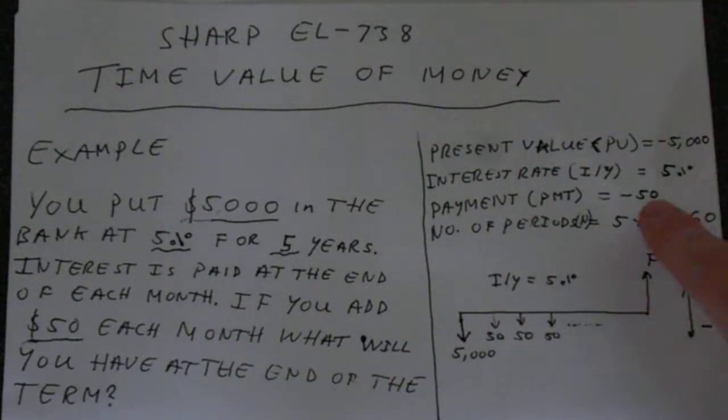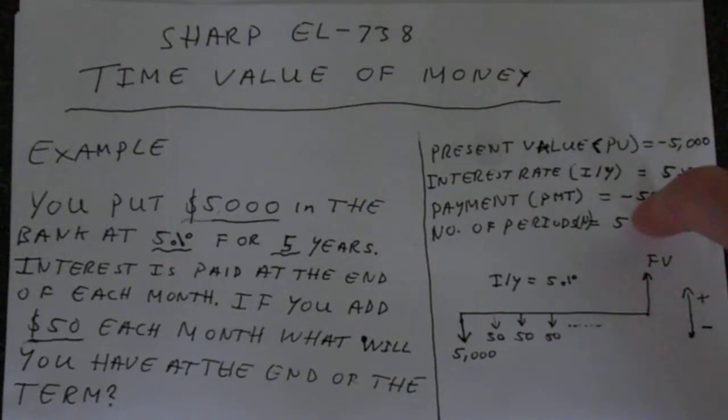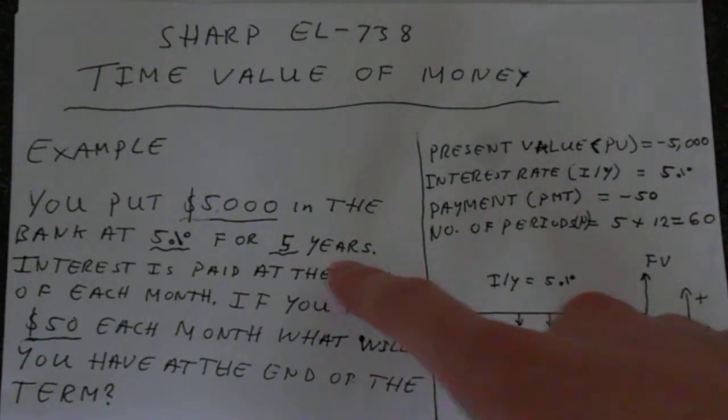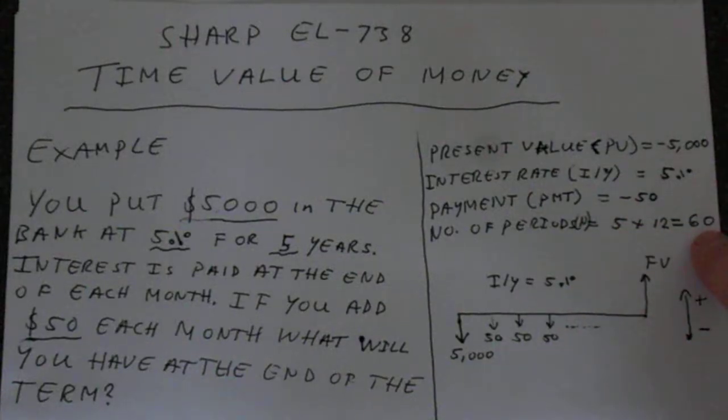Same thing with our payment of $50 each month. That's a payment of minus $50. The number of payments, well, we're paying in for 5 years and there's 12 months in a year. So that's 60 payments, 5 times 12. And the interest rate is 5%.